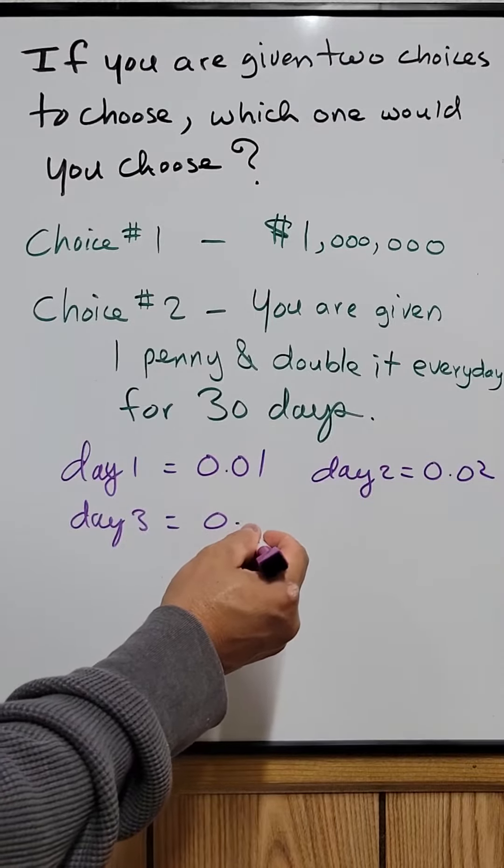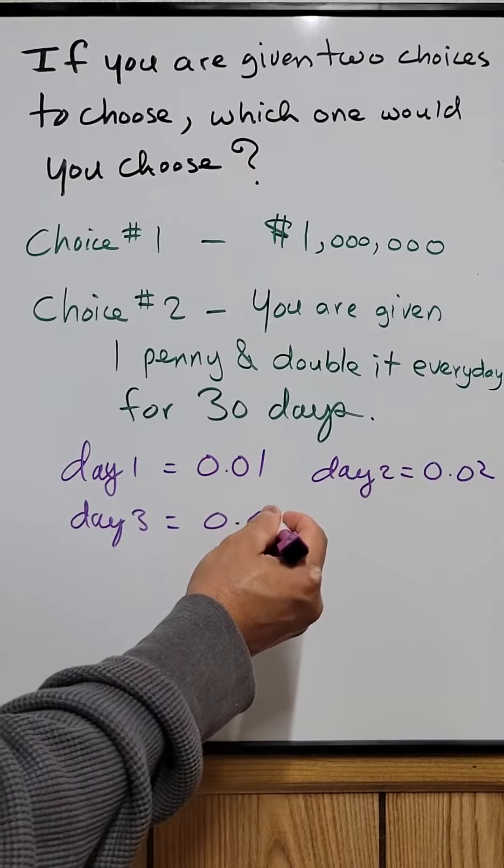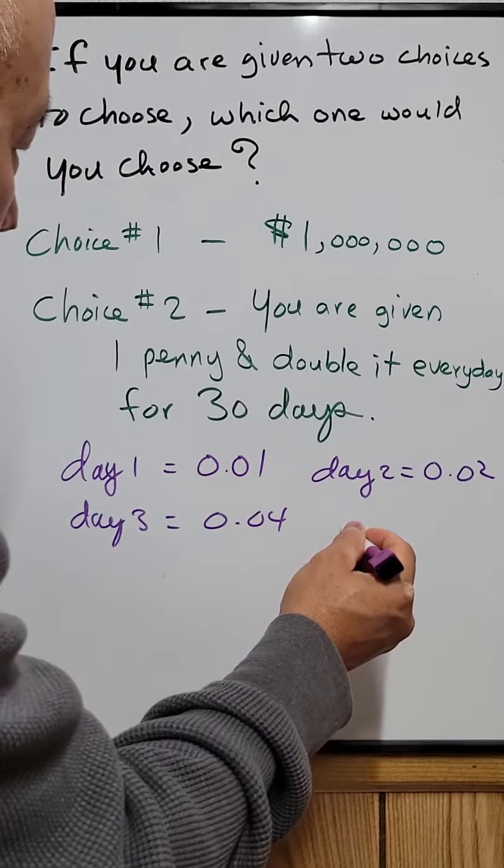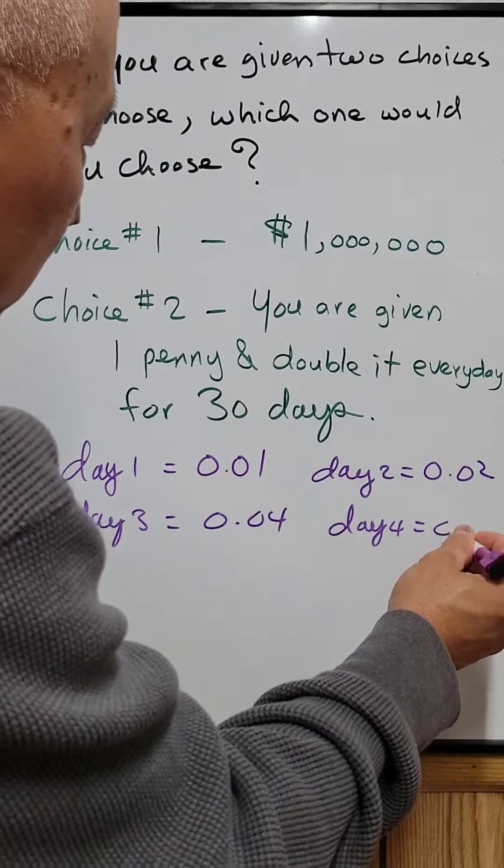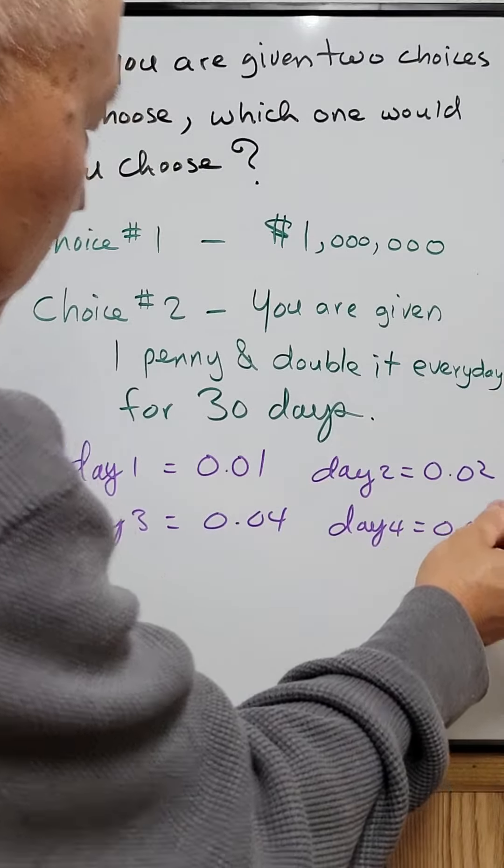...you double it, will be four pennies. Day four: double it, will be eight pennies. So you can see you double every day.